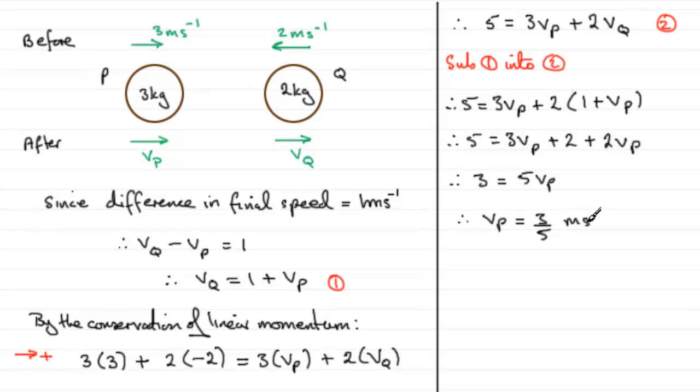Then for the final velocity of P, all we've got to do now is just substitute this back into equation 1 to get VQ. If we just say substitute VP equals 3/5 into equation 1, we therefore have VQ equals 1 plus VP, so that's 1 plus 3/5. 1 plus 3/5 is going to give us 8/5 meters per second.